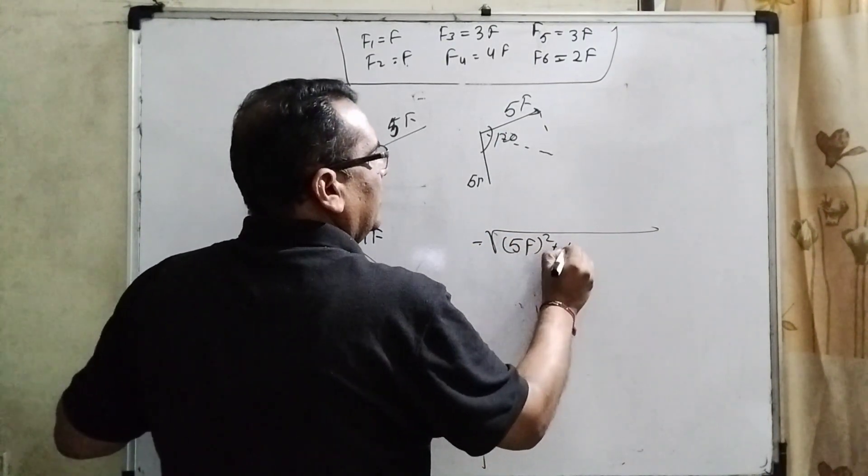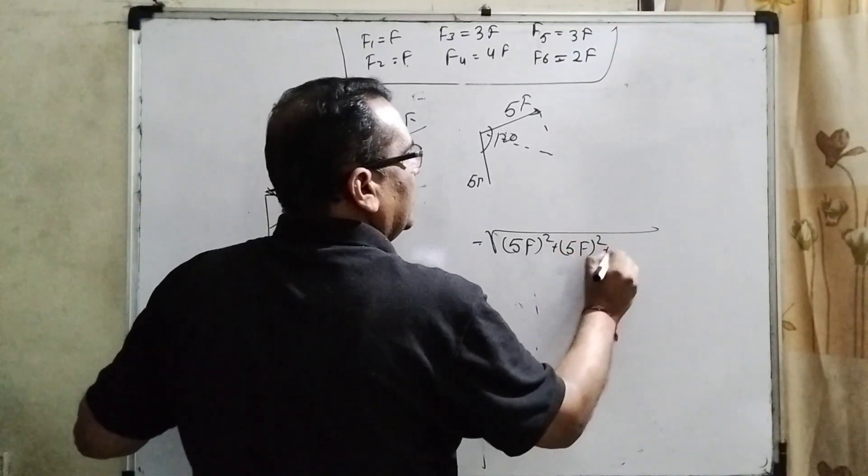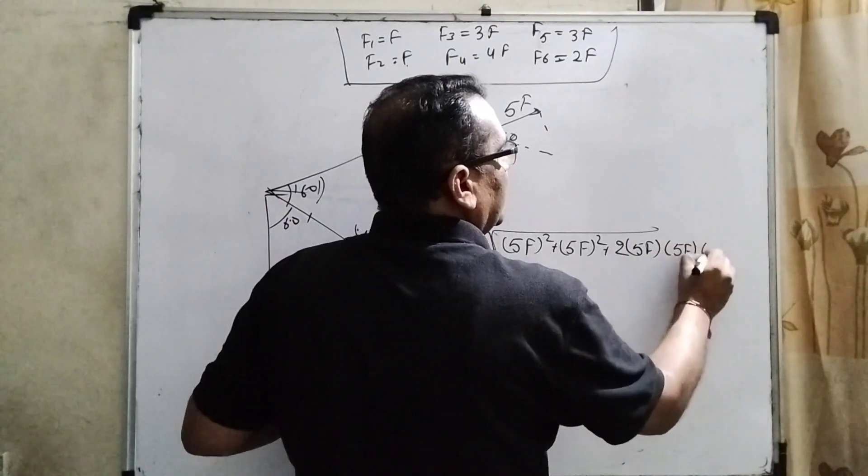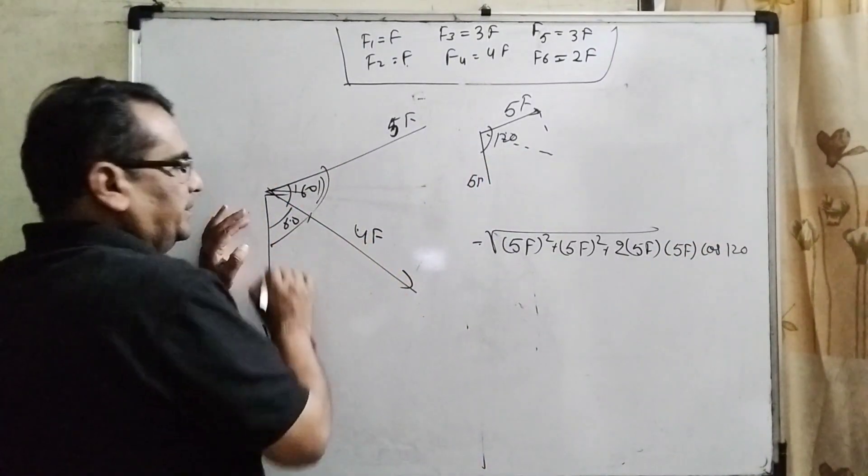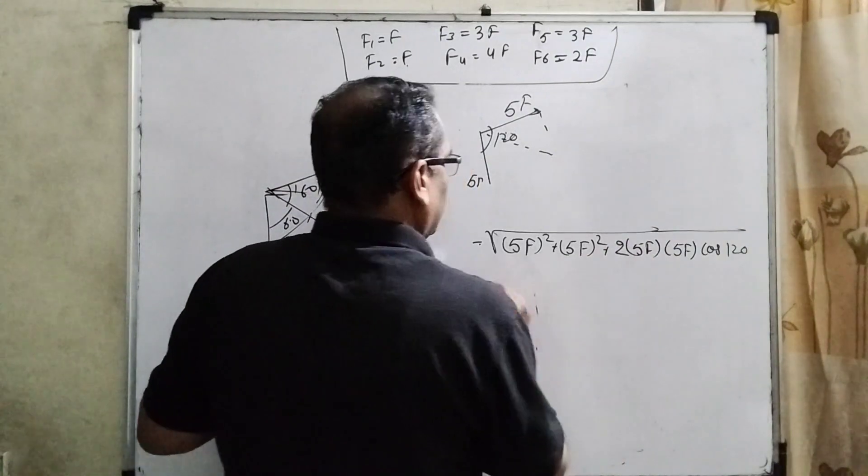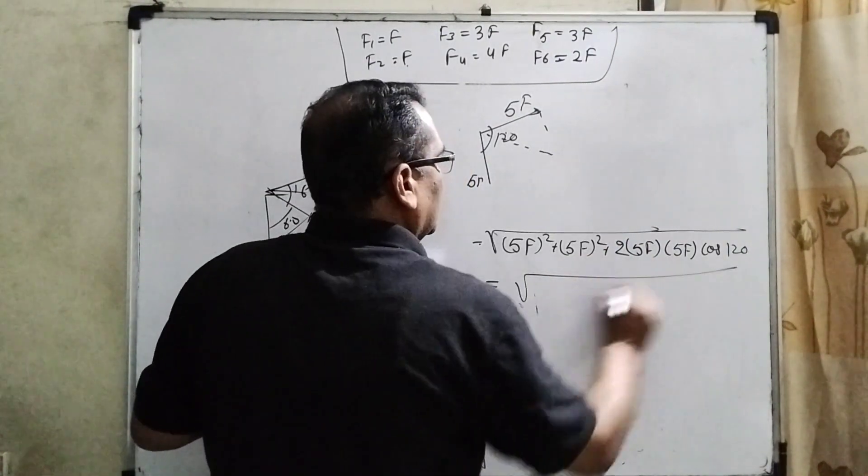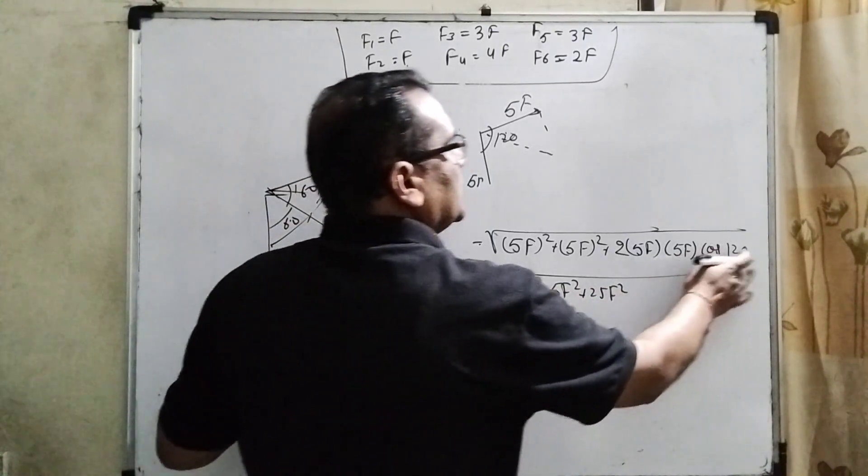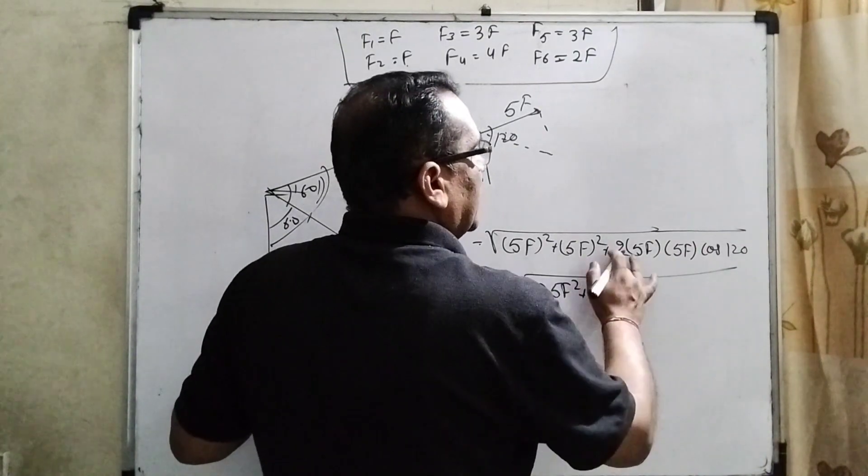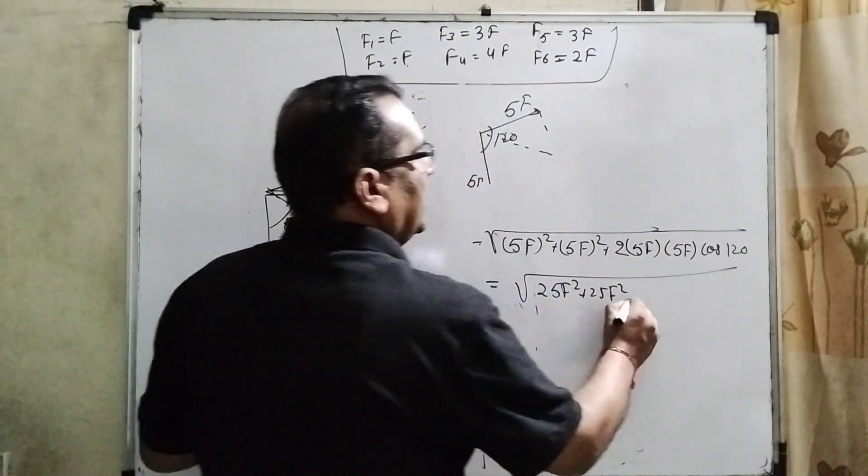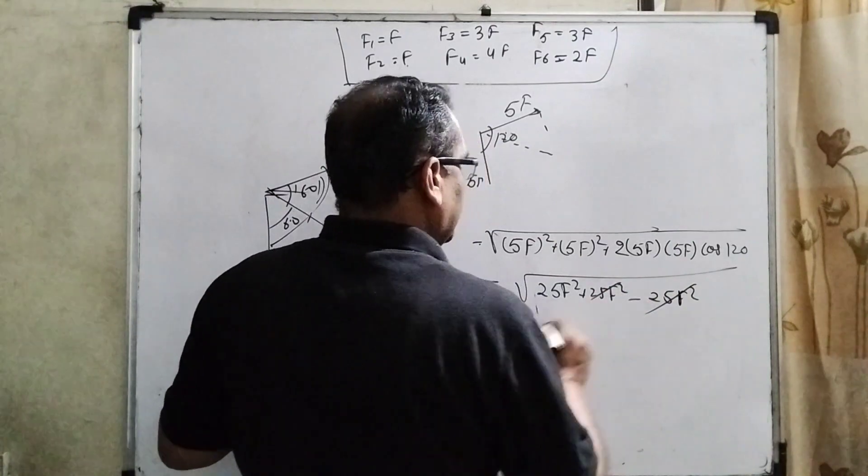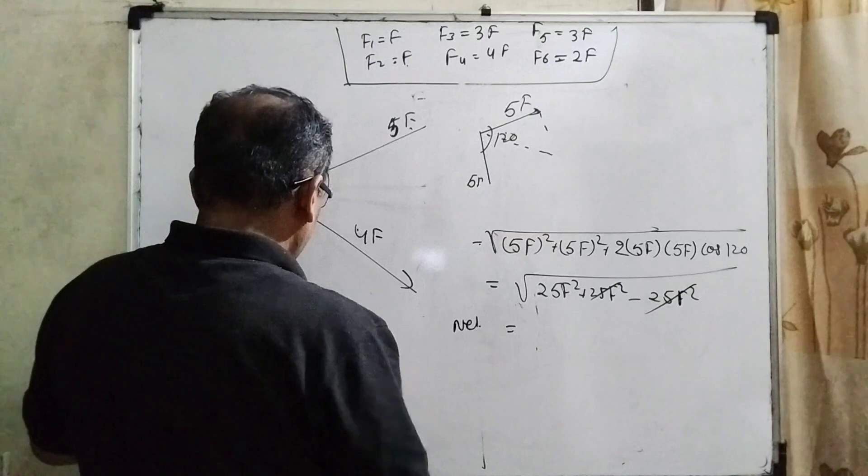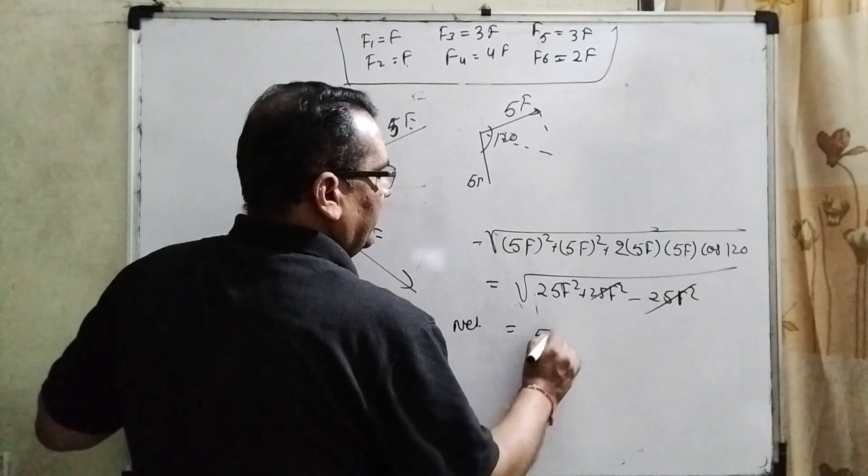5F square plus 5F square plus 2, 5F, 5F cos total angle is 120. And how much? You can see that 25F square plus 120 is minus 1 by 2. 2 to cancel and minus again 25F square. This will be cancel out. And net force of this 5F and 5F will become 5F.